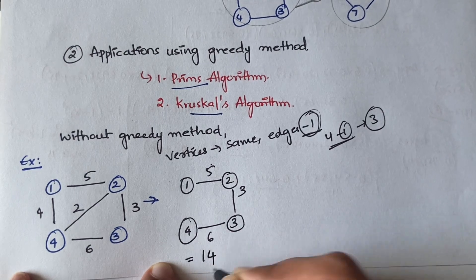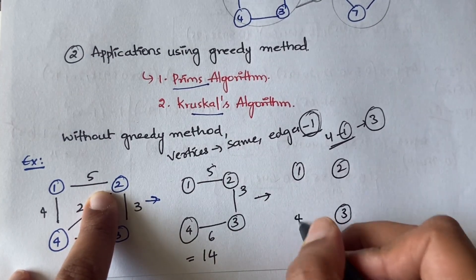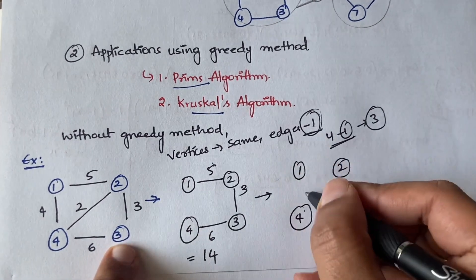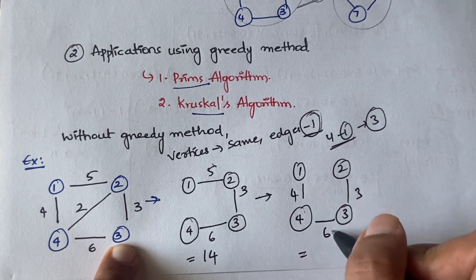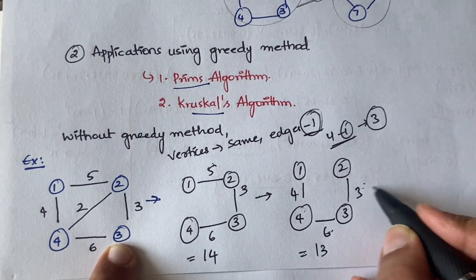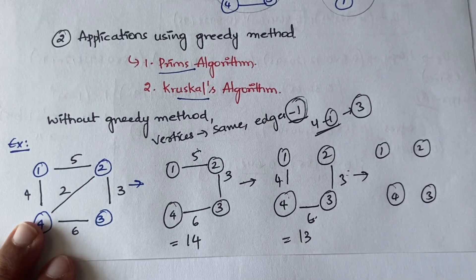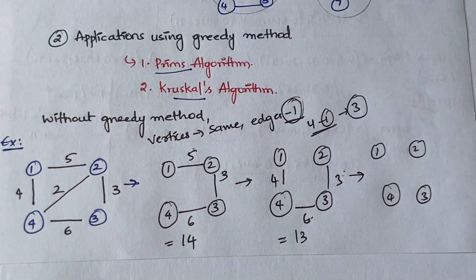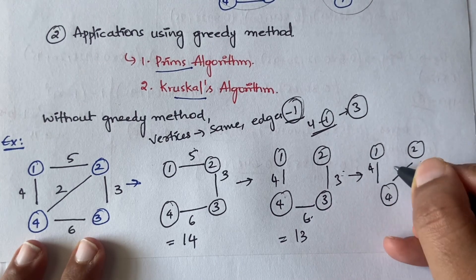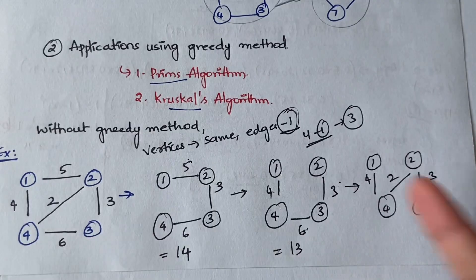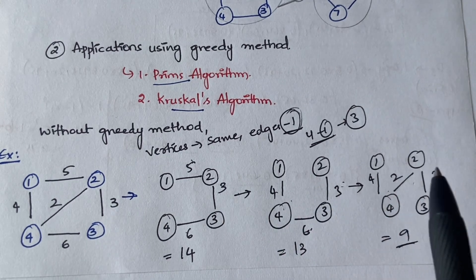The total cost for that first possibility is 5 plus 3 plus 6, which is 14. Another alternative connects them with costs 4, 6, and 3, giving a total of 13. Yet another alternative uses edges costing 4, 2, and 3, giving 4 plus 2 plus 3 equals 9. Among these three spanning trees, the one with cost 9 is the minimum cost spanning tree.